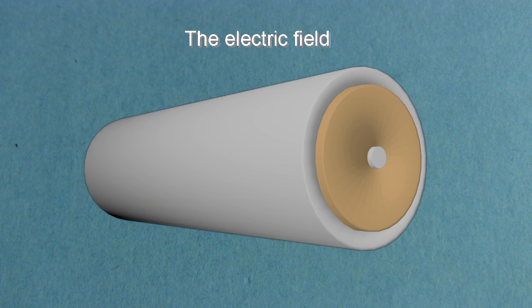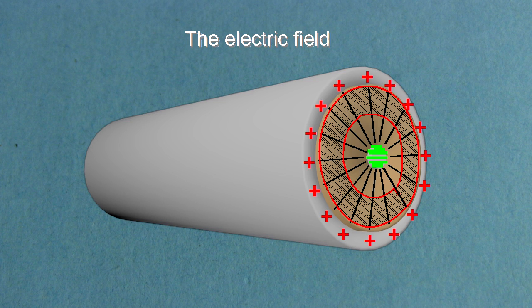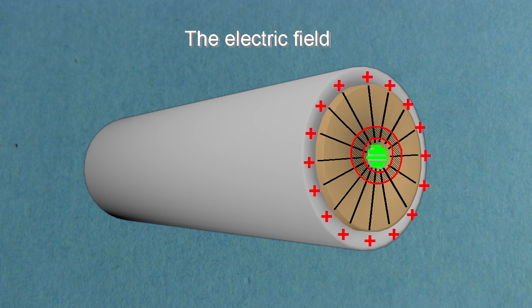Let's say you have a capacitor where one plate is a rod, down the center of the second plate, which is a cylinder. In between is the dielectric. Near the cylinder, the electric field is weak, since it's spread out. But near the rod, the electric field is stronger, and so there's a higher chance the dielectric will break down in that area.